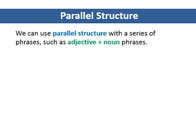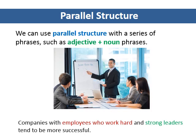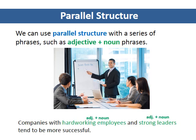We can use parallel structure with a series of phrases, such as phrases with an adjective plus a noun. The sentence contains a noun plus adjective clause and an adjective plus noun. How can we rewrite the sentence to have two adjective plus noun phrases? If we change 'employees who work hard' to 'hard-working employees,' this sentence is parallel. We are now repeating the same grammatical form.